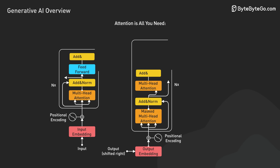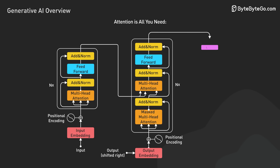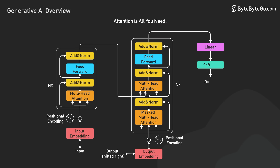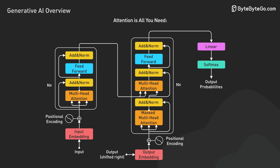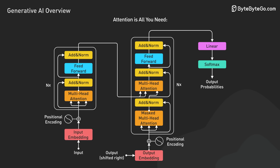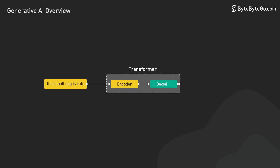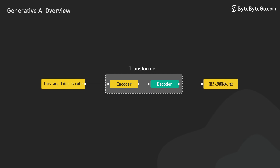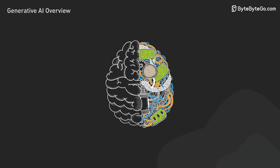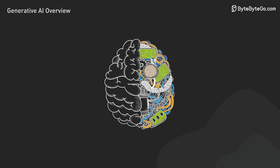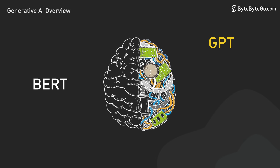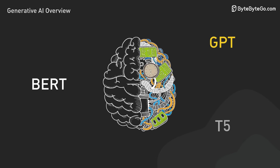Transformer models are a type of deep learning model architecture introduced in the famous paper 'Attention is All You Need' in 2017. They rely on self-attention mechanisms to process and generate sequential data, such as text. Transformers have become the foundation for many NLP models, such as BERT, GPT, and T5.